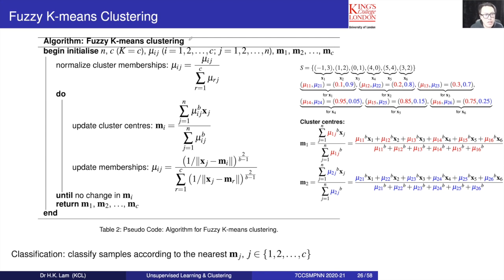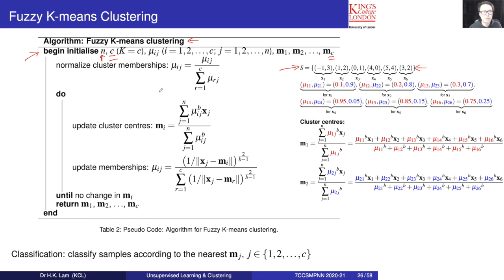This is the Fuzzy K-Mean clustering algorithm. In the initial step, we need to have a dataset ready corresponding to the application at hand. Then we choose C, the number of clusters. We would like to divide N samples into C clusters. We then perform normalization because initially when we generate the membership values randomly, they may not sum to one.